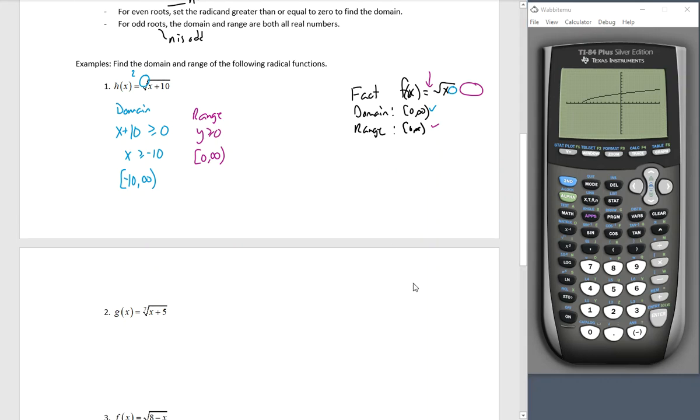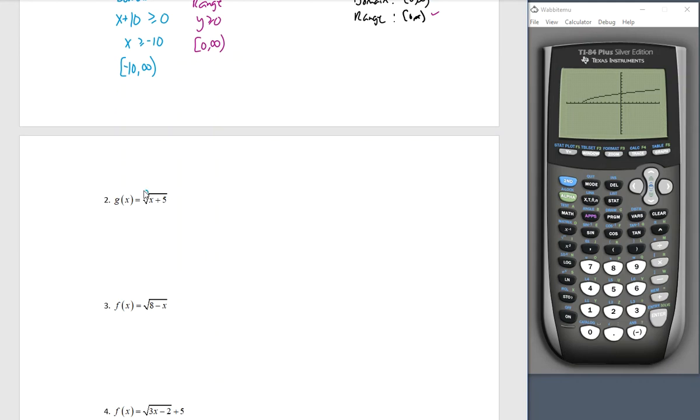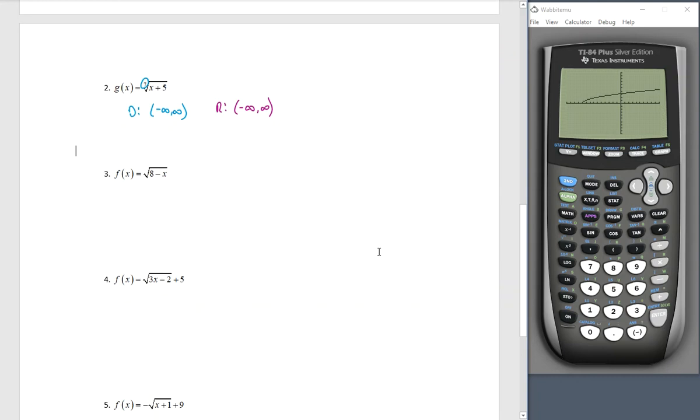Number two. For odd roots, the domain and range are both all real numbers. So I see here, once I see the index of seven, I know my domain is all real numbers. I know my range is all real numbers. No work to be done. Those are our favorite problems because they just fall into place. So of course, I'm not going to give you very many of those.